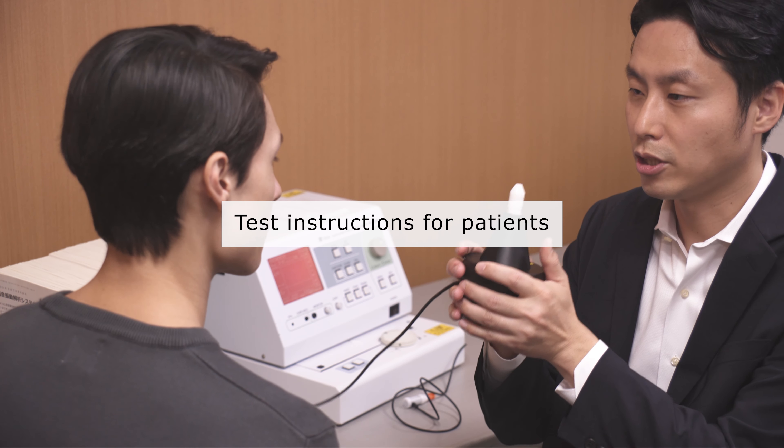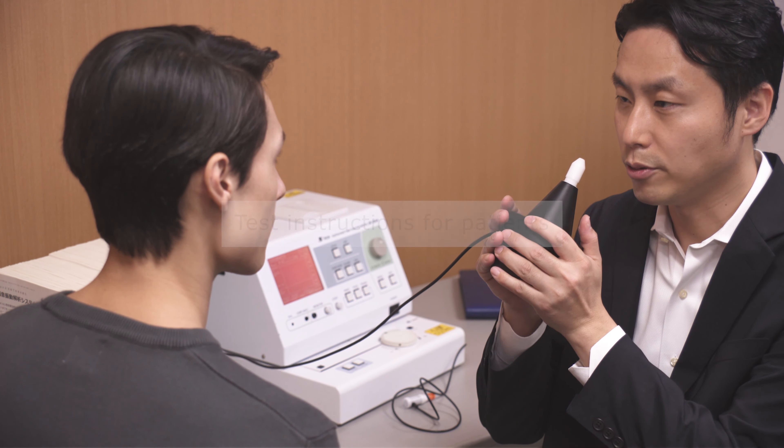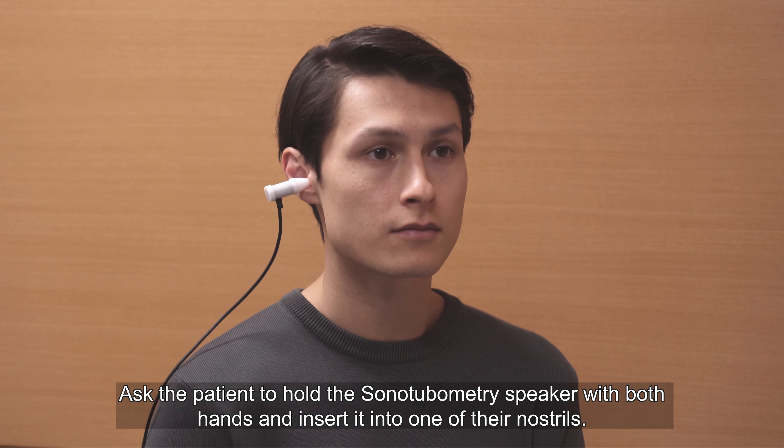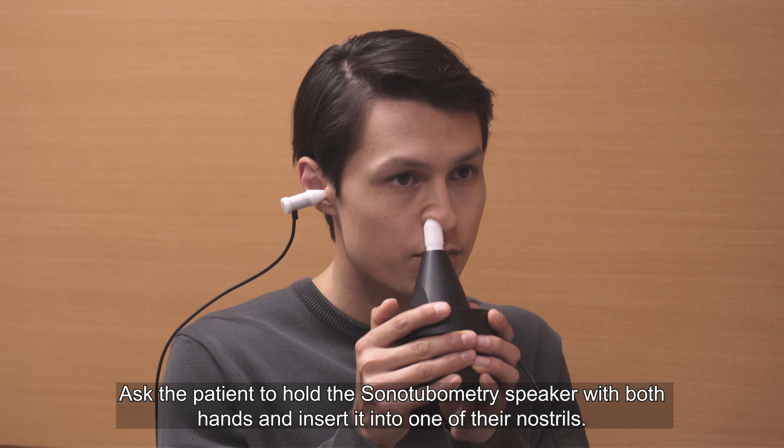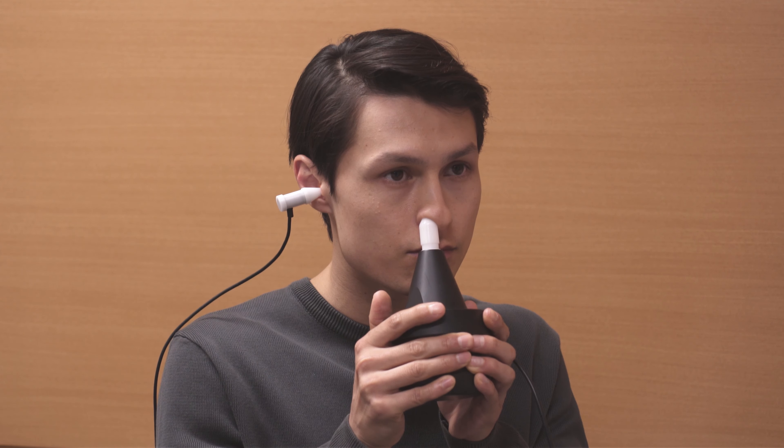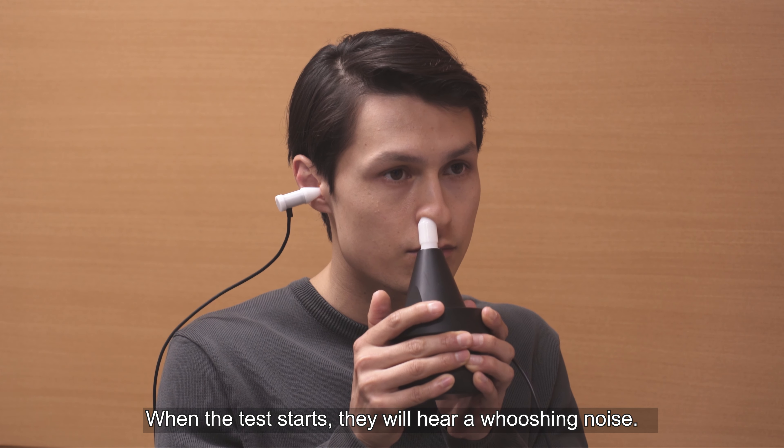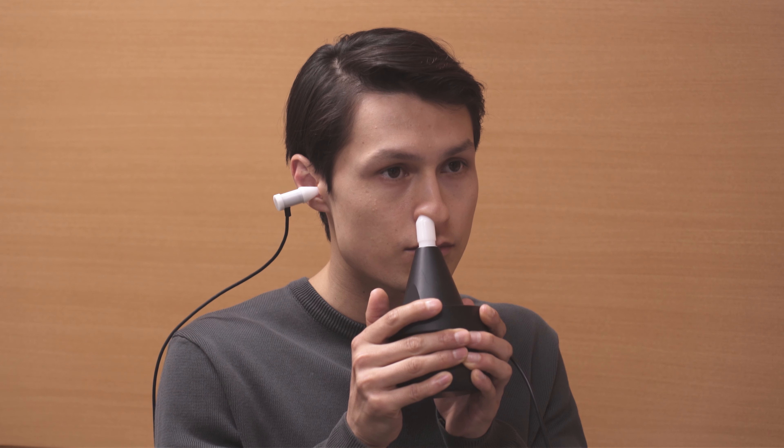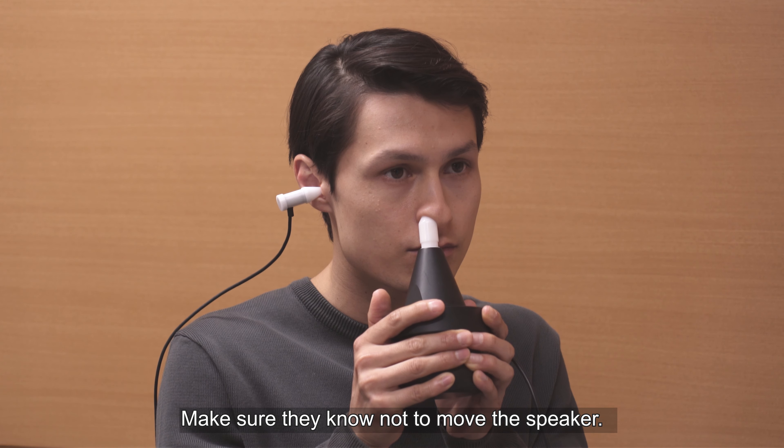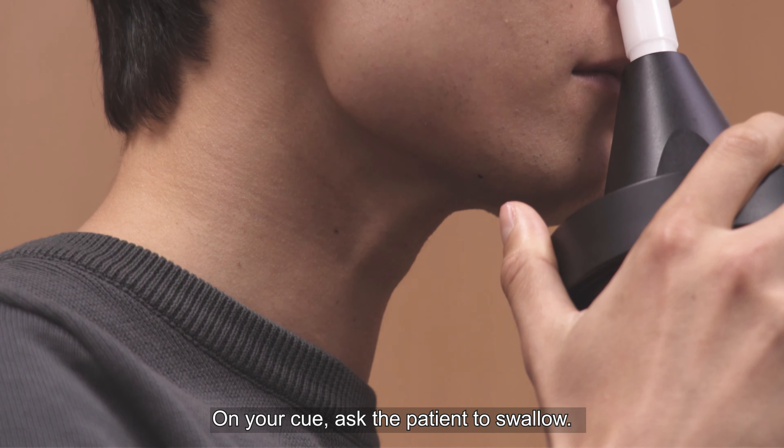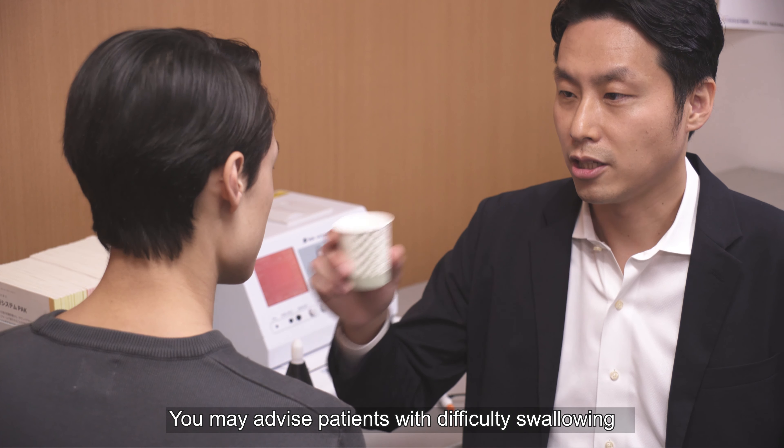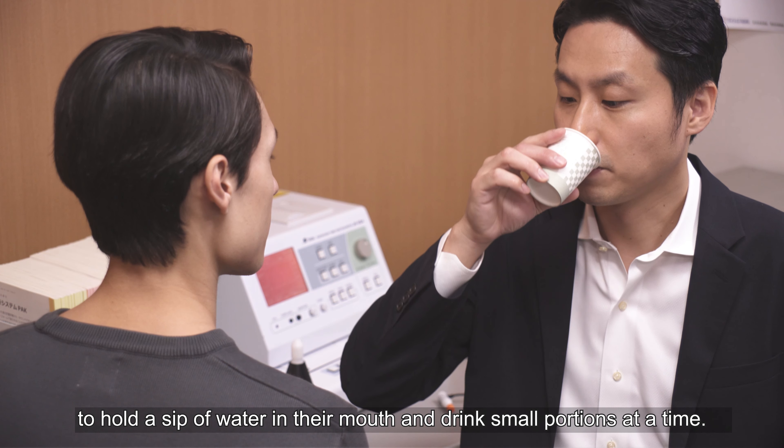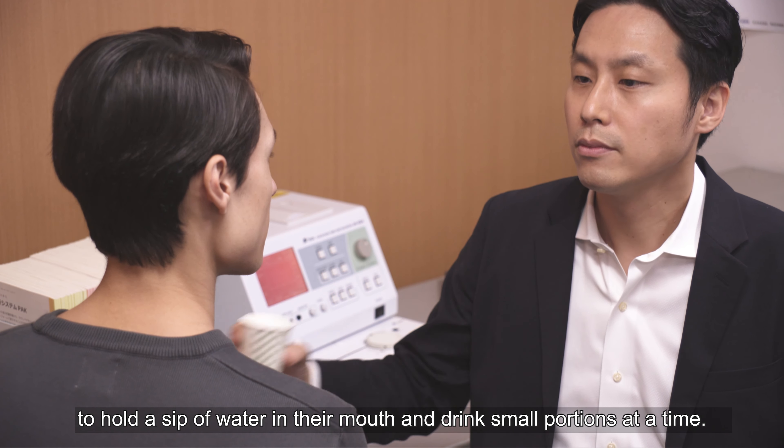Provide the following instructions to your patient during the test. Ask the patient to hold the sonotubometry speaker with both hands and insert it into one of their nostrils. When the test starts, they will hear a whooshing noise. Make sure they know not to move the speaker. On your cue, ask the patient to swallow. You may advise patients with difficulty swallowing to hold a sip of water in their mouth and drink small portions at a time.